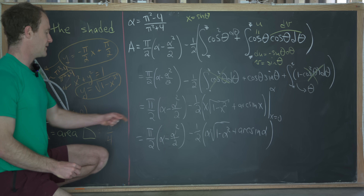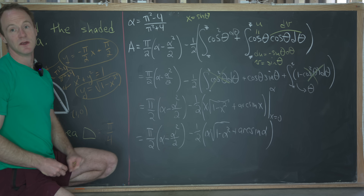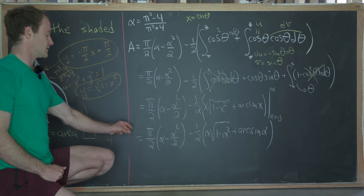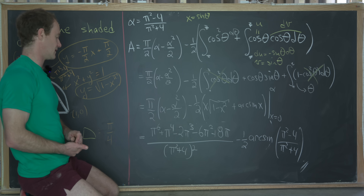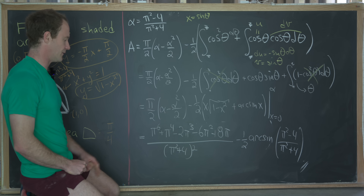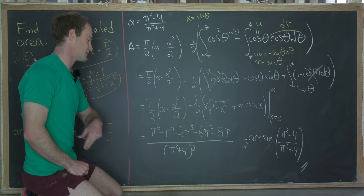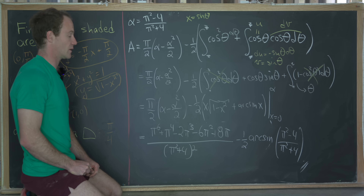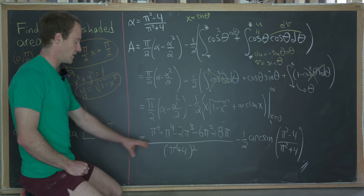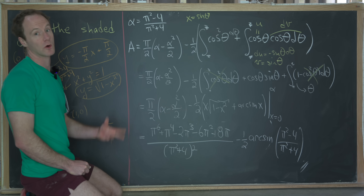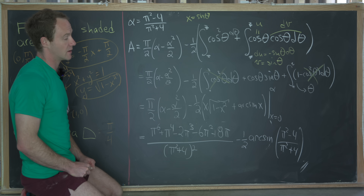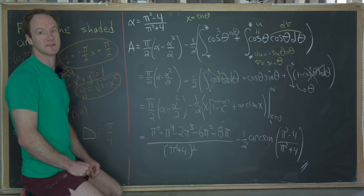Combining everything and substituting α = (π² - 4)/(π² + 4), the final answer is: [π⁶ + π⁴ - 2π³ - 2π² + 8π] / (π² + 4)² - (1/2) · arcsin((π² - 4)/(π² + 4)). As you can see, it's quite a mouthful — not a pretty closed form — and that's a good place to stop.